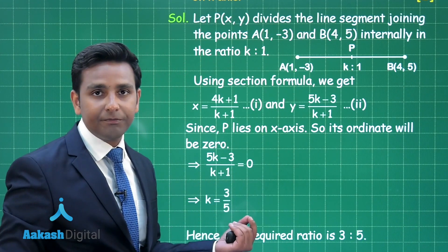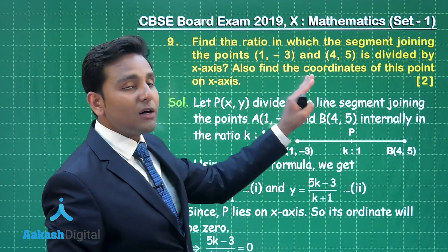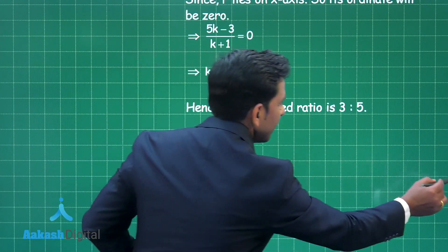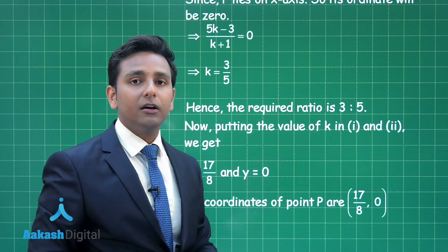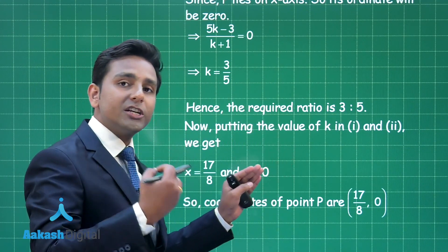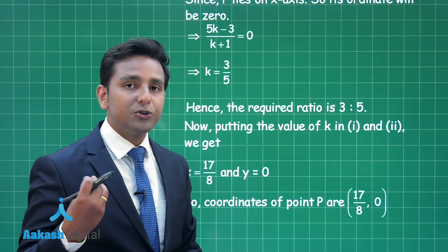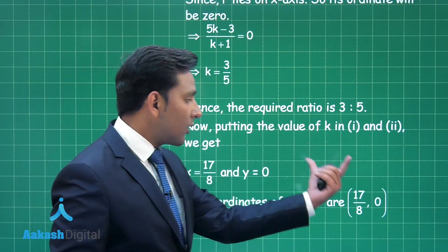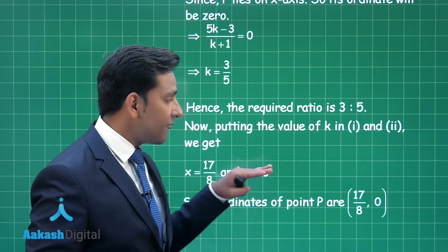Using this information, we find the value of k as 3 upon 5, so the required ratio is 3 to 5. Now substituting k = 3/5 into equation 1 and 2, we obtain x as 17 upon 8 and y equal to 0, since the coordinate of any point on the x-axis is always 0. So the required coordinates of point P are (17/8, 0), which divides the given line segment in the ratio 3 to 5.